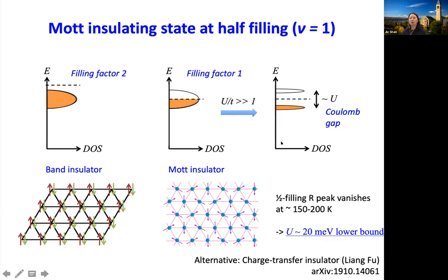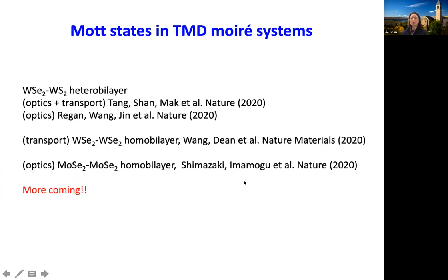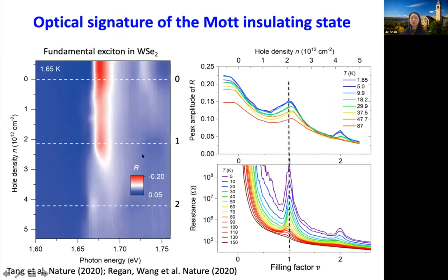We have experimental evidence to show that this state is consistent with a Mott insulator. In order to fully support this argument, we need to look at the magnetic properties once the charges are localized. There are also other studies on similar systems — homo-bilayer, hetero-bilayer — using optics and transport, and we all see something similar in the TMD moiré system. If you follow the intensity change as a function of doping, you see extra bumps, and those bumps are Wigner crystal-like states, first identified by Feng Wang's group using optical techniques.